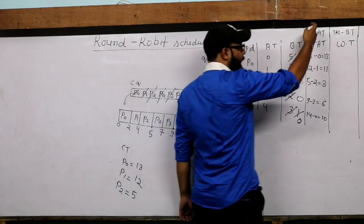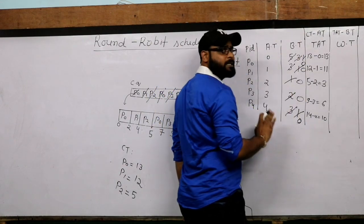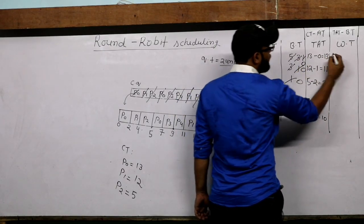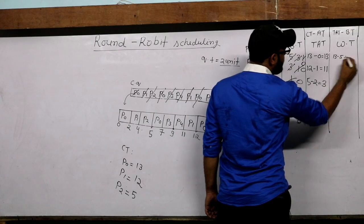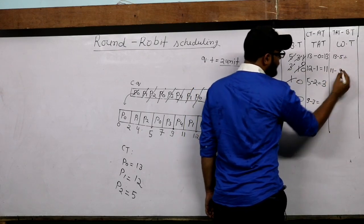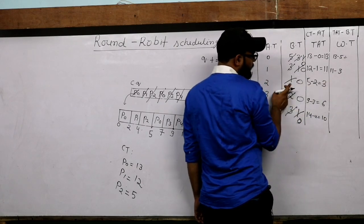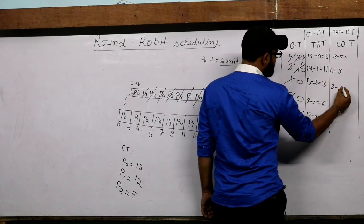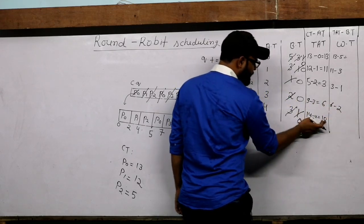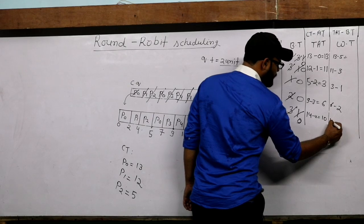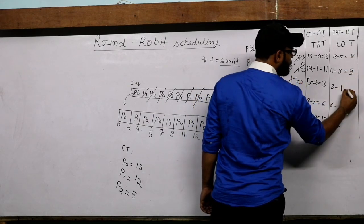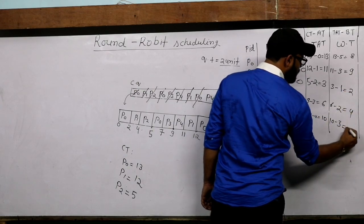Now for waiting time: WT = TAT minus burst time. Waiting time of P0 = 13 minus 5 = 8. Waiting time of P1 = 11 minus 3 = 8... correction: 11 minus 3 = 8. Wait: P1 burst = 3, so WT = 11 - 3 = 8. P2: 3 minus 1 = 2. P3: 6 minus 2 = 4. P4: 10 minus 3 = 7. So waiting times are: 8, 8, 2, 4, 7.